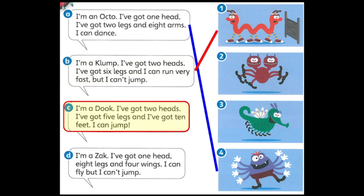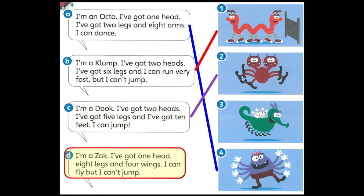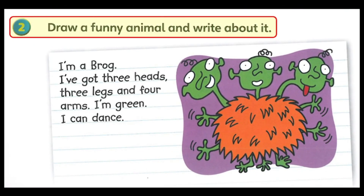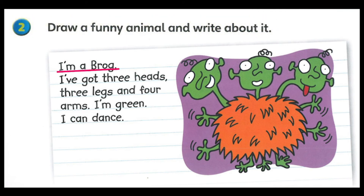C. I'm a duck. I've got two heads, five legs, and ten feet. I can jump. D. I'm a sack. I've got one head, eight legs, and four wings. I can fly but I can't jump. 2. Draw a funny animal and write about it. I am a brogue. I've got three heads, three legs, and four arms. I am green. I can dance.